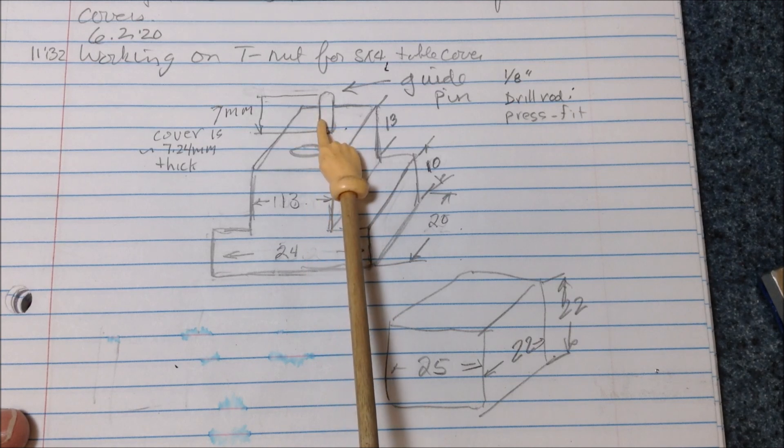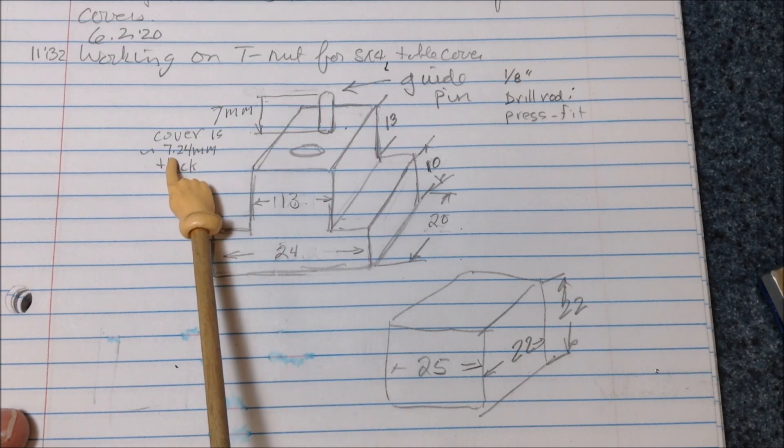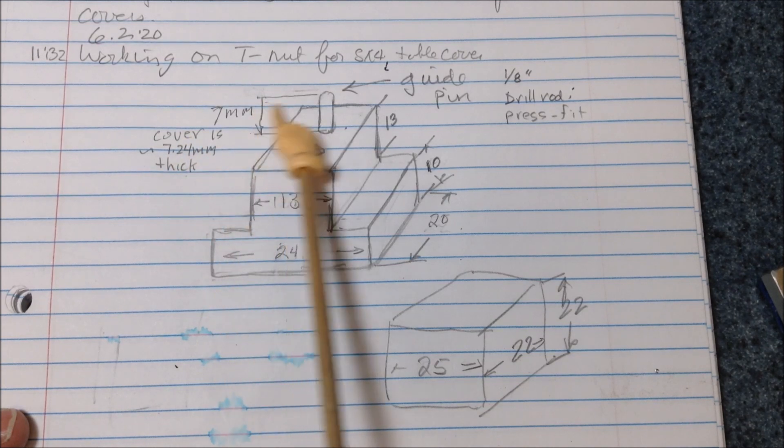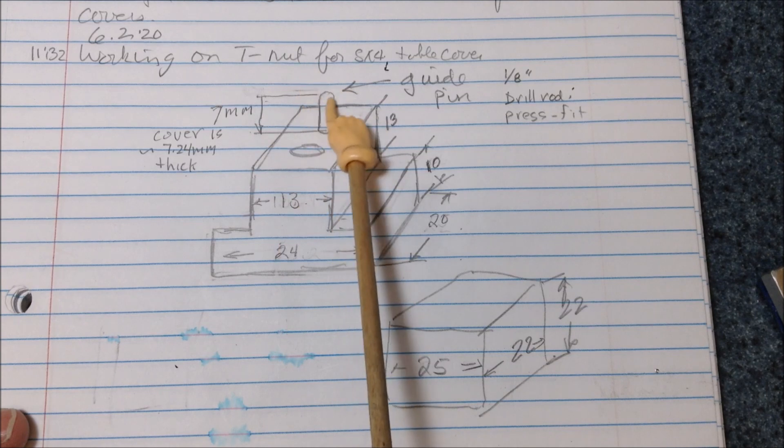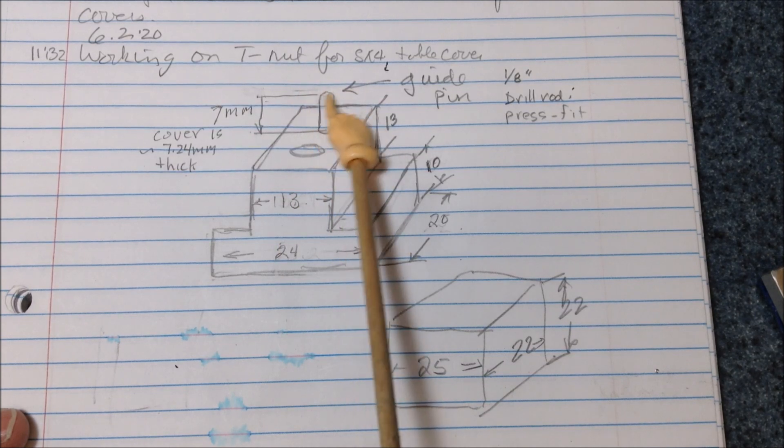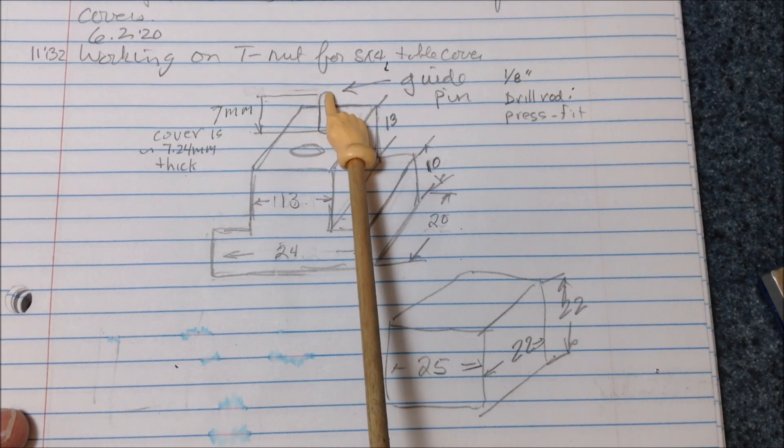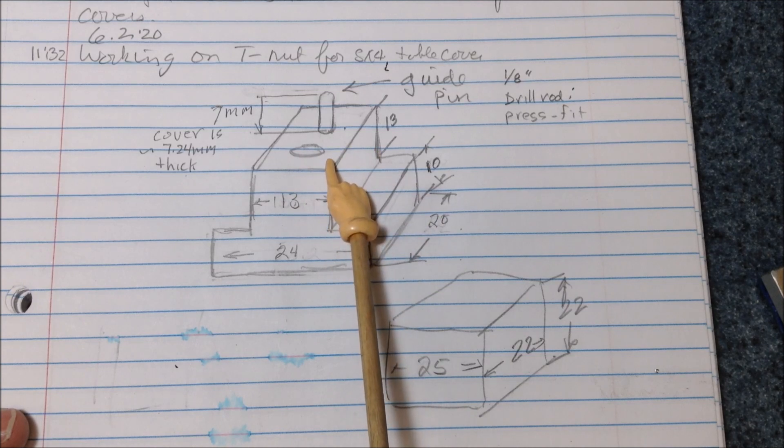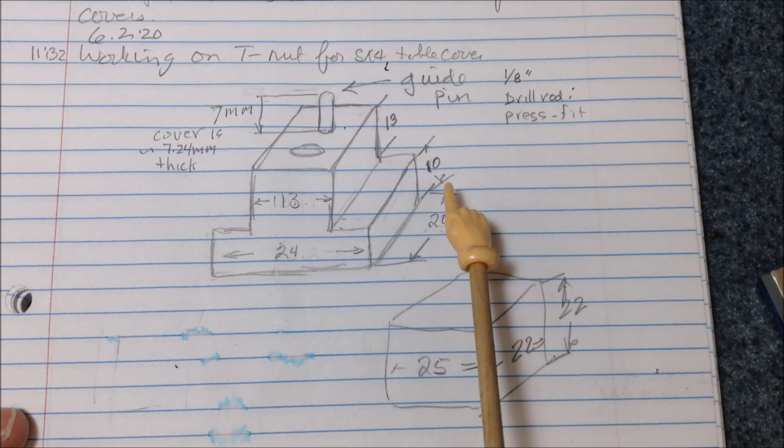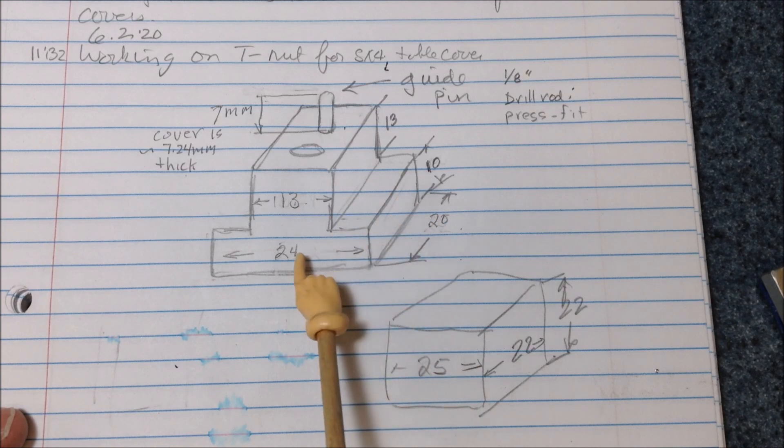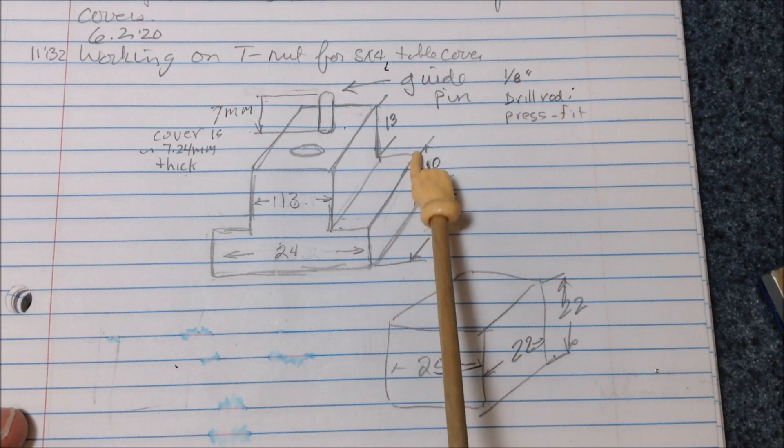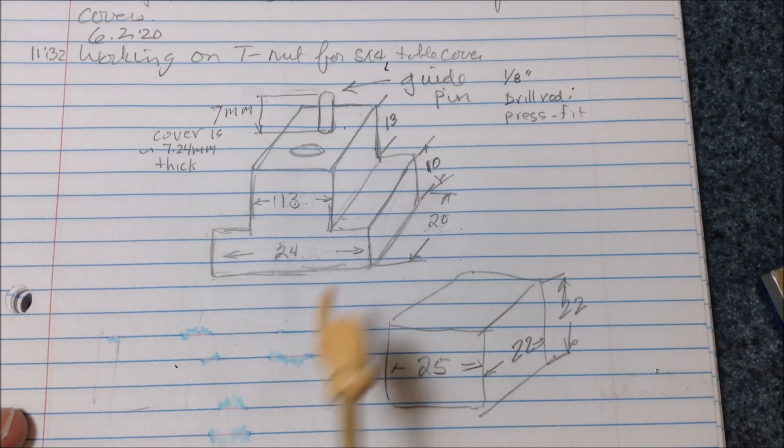And I decided on this one the covers are actually about seven and a quarter millimeters thick. So I'm gonna make this just under that seven millimeters and hopefully I won't drill a through hole for these so the hole or the pinhole will be hidden and only the hole for the screw will show on top of the table covers if it all works out. So these dimensions are just all metric: 24 down here, 13, 10 and 13, and then 20 long.